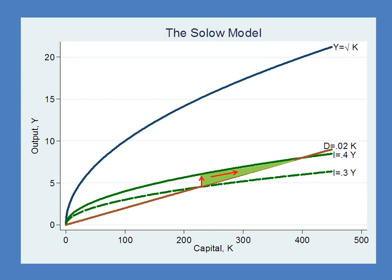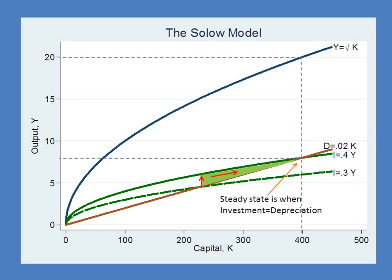That capital stock will continue to grow, getting larger and larger, until we reach the point where investment is equal to depreciation — until the capital stock is so large that it depreciates enough each period that you need all of your investment simply to maintain the capital stock at its new higher level. Notice at the new higher level of the capital stock, we have a higher GDP per capita.